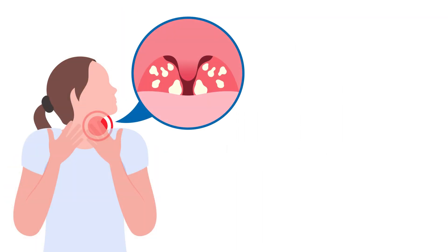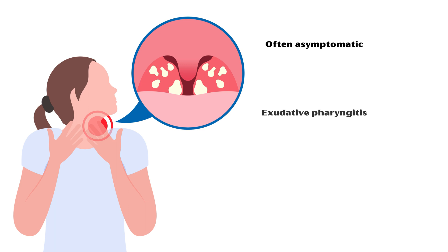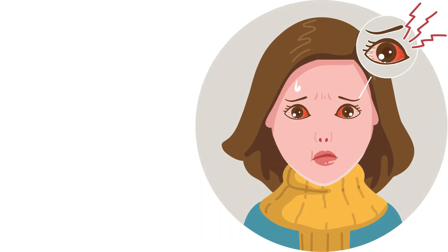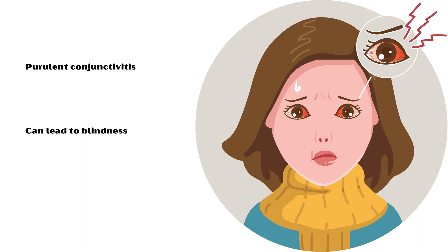Gonococcal pharyngitis in both men and women is often asymptomatic. However, they may present with exudative pharyngitis with cervical lymphadenopathy. Infection of the eye causes purulent conjunctivitis, which can lead to blindness if left untreated.